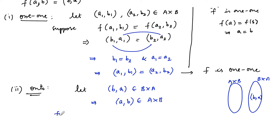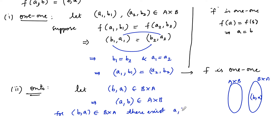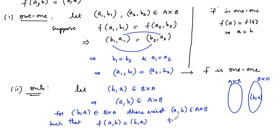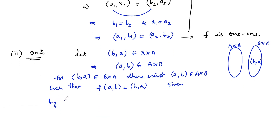So for (b, a) belonging to B cross A, there exists (a, b) belonging to A cross B such that f of (a, b) is equal to (b, a), since it is given. Therefore, by the definition of onto, we can say f is an onto function.